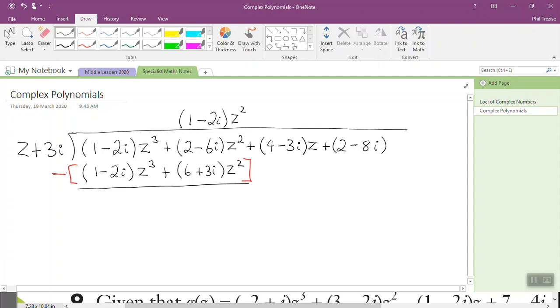We have 2 subtract 6, that's negative 4. Negative 6 subtract 3 is negative 9i, and that's z-squared. All right, bring down the next term from the original polynomial, plus 4 minus 3i z.